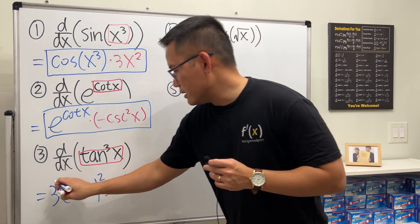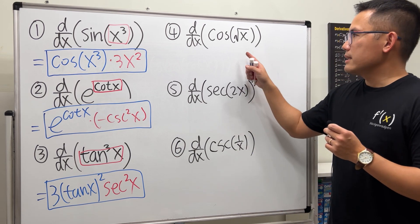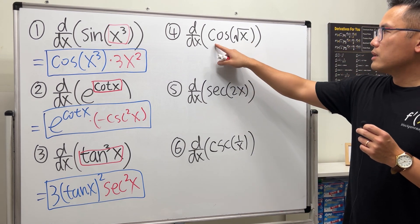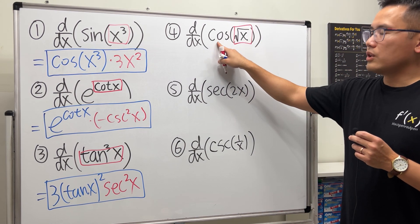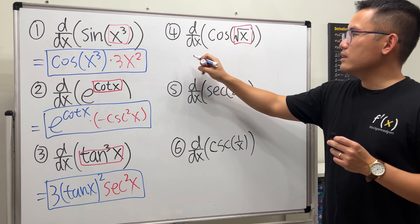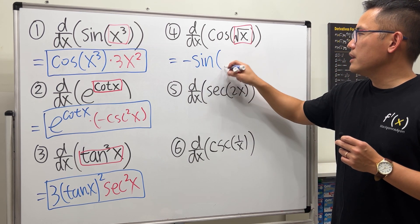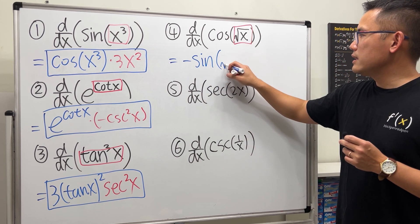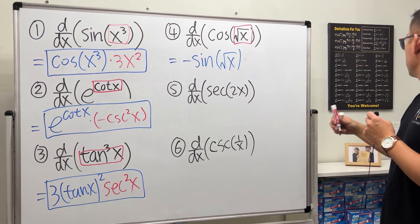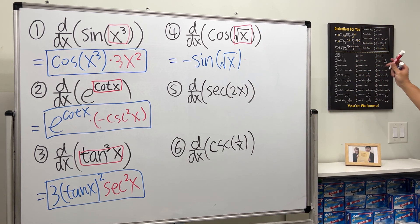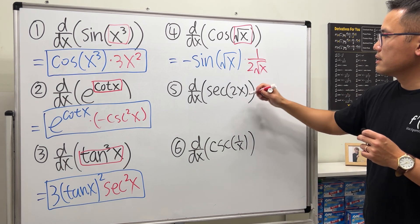Number four: cosine of square root of x. Cosine will give us negative sine — that's its derivative — the inner function stays, and then multiply by the derivative of square root of x, which is 1 over 2 square root of x.